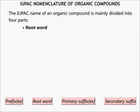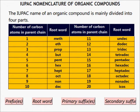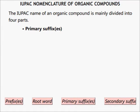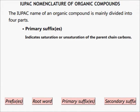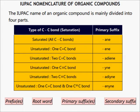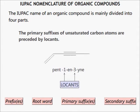Number two: root word. This indicates the length of the parent chain, and a list is given in the table. Number three: primary suffixes. This indicates saturation or unsaturation of the parent chain, as given in the table. The primary suffixes of unsaturated carbons are also preceded by locants.